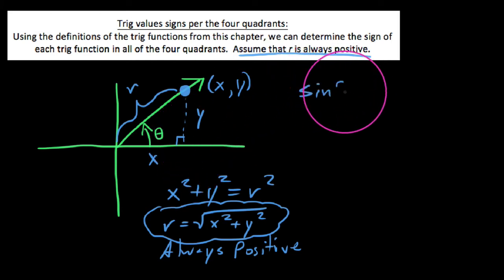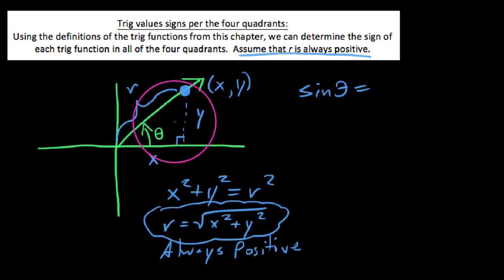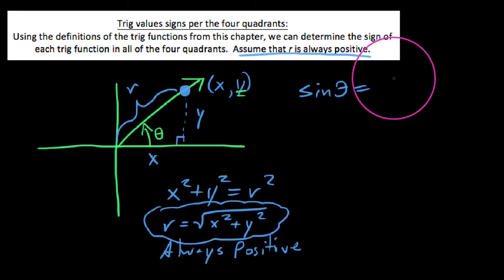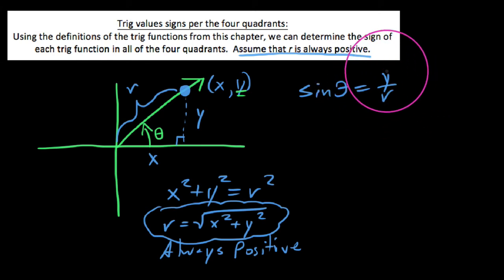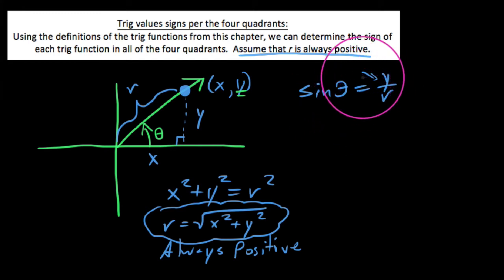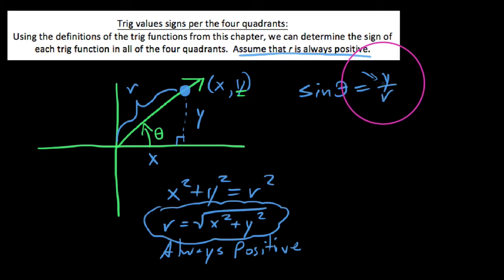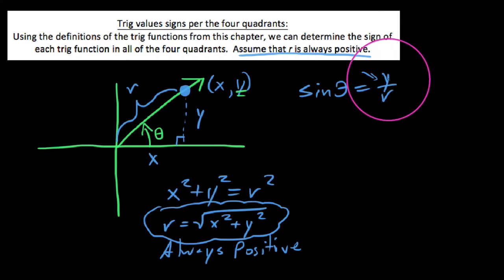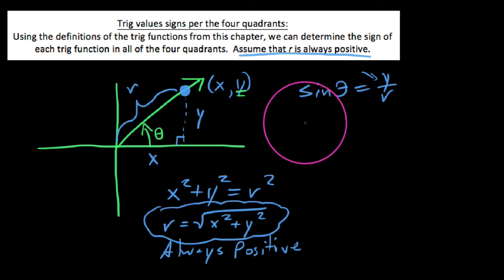If I wanted to find sine of this angle theta, recall that sine of theta is the opposite side over the hypotenuse. In this case, that's the y value of our point divided by r, giving us y over r. R has to be positive, but y doesn't necessarily have to be positive — y could be negative. This means the overall value of sine can sometimes be negative. Sine would be negative when the y value is negative, because a negative divided by a positive is a negative.